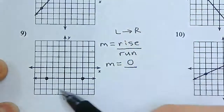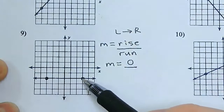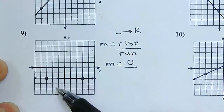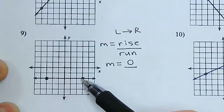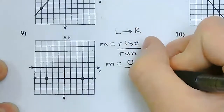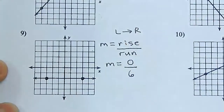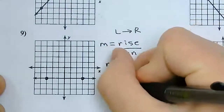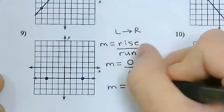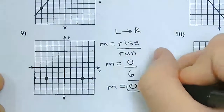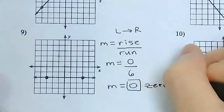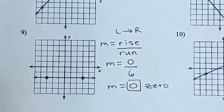Now how far do I need to run to get to this point? I need to go to the right 1, 2, 3, 4, 5, 6 spaces, so my run is going to be a positive 6. Now I have 0 over 6, and 0 divided by 6 is 0. So this line has a slope of 0. Whenever you have a 0 slope, you're going to have a completely horizontal line.